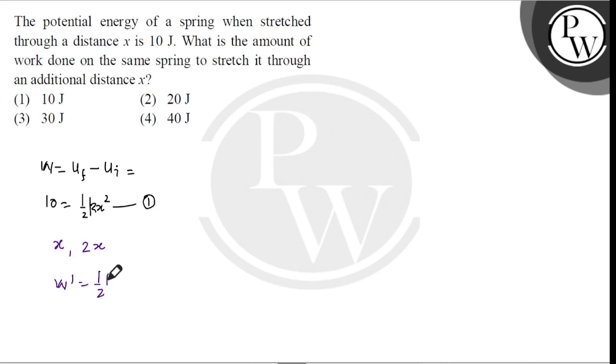equals to 1/2 k into 2x whole square minus 1/2 k x square, that equals 3/2 k x square which equals 3 into 10, so 30 J. The answer is option 3. I hope you understood this solution. Thank you.